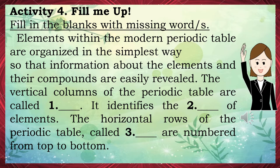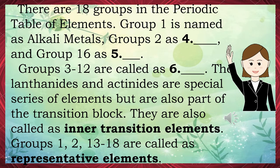Activity 4: Fill Me Up. Fill in the blanks with the missing words. Elements within the modern periodic table are organized so that information about the elements and their compounds are easily revealed. The vertical columns of the periodic table are called groups — it identifies the families of elements. The horizontal rows of the periodic table, called periods, are numbered from top to bottom.